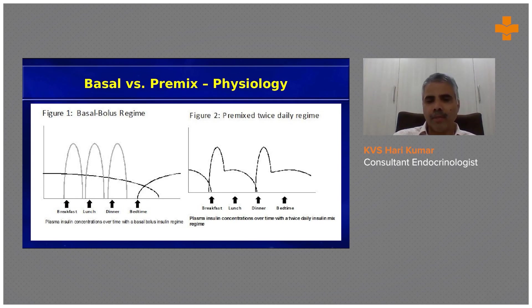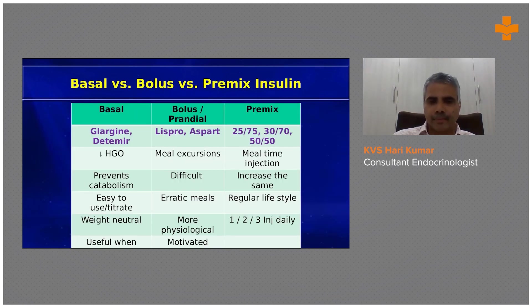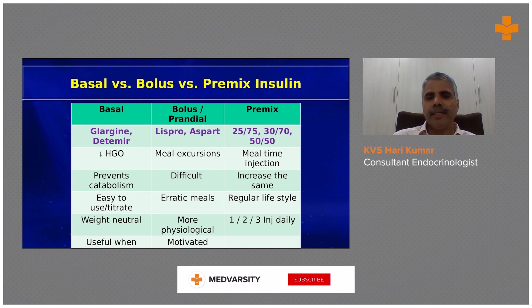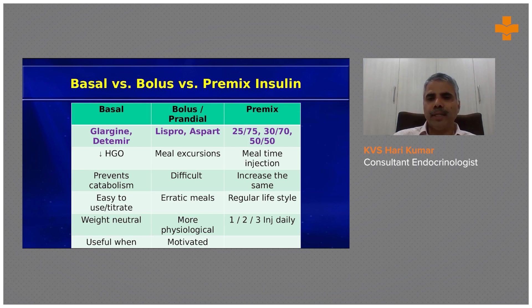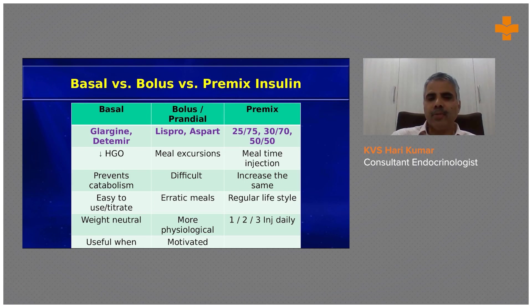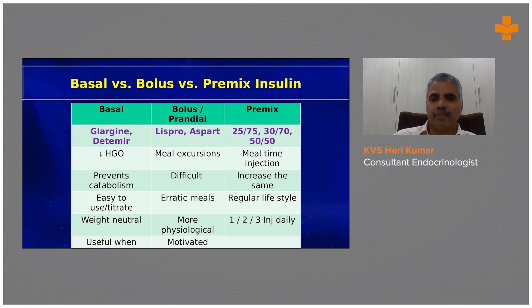The basic differences between insulins: the basal ones — glargine and detemir — reduce hepatic glucose output, prevent catabolism, and are easy to use and titrate because it's a single injection. Whereas the bolus ones are related to meal-related excursions and are more difficult to control, but may be useful if you have an erratic meal pattern because you only need to inject them when taking a meal.